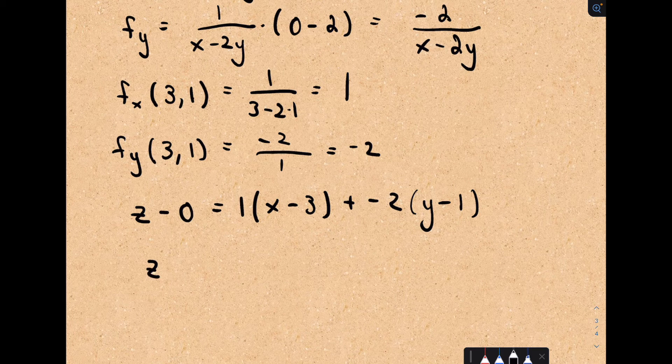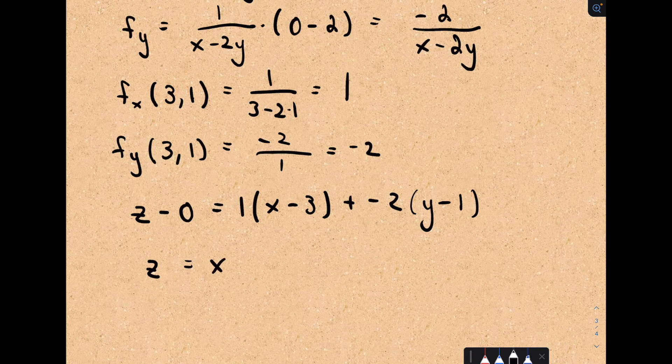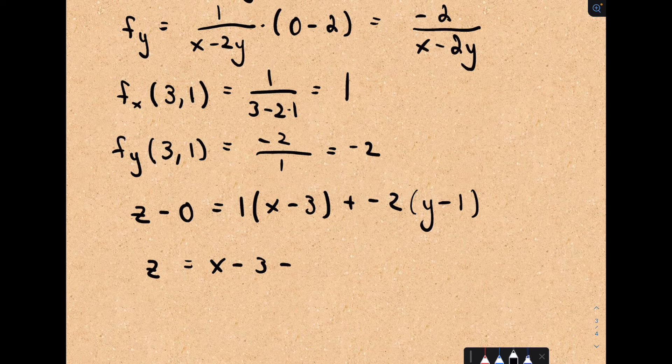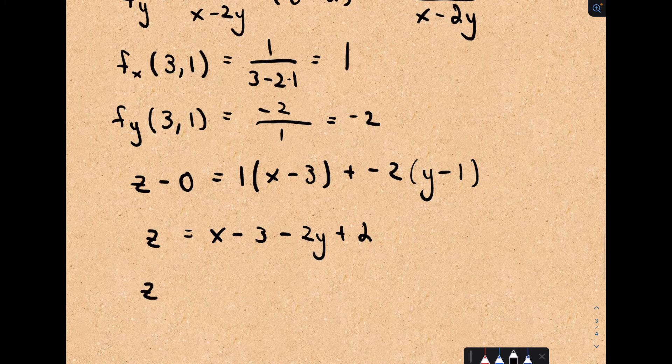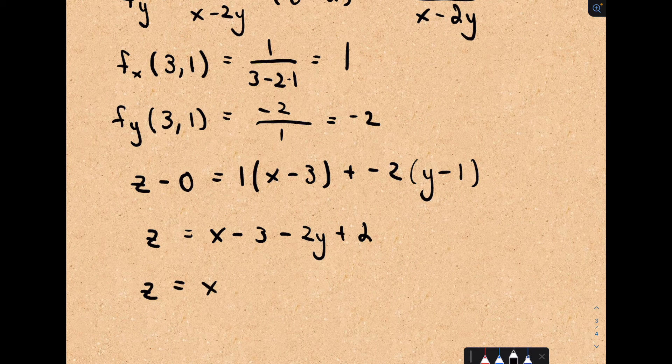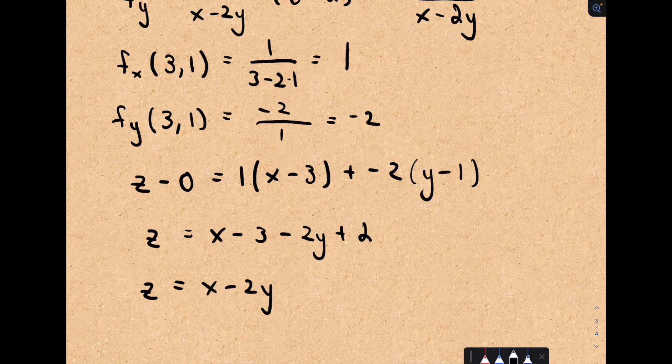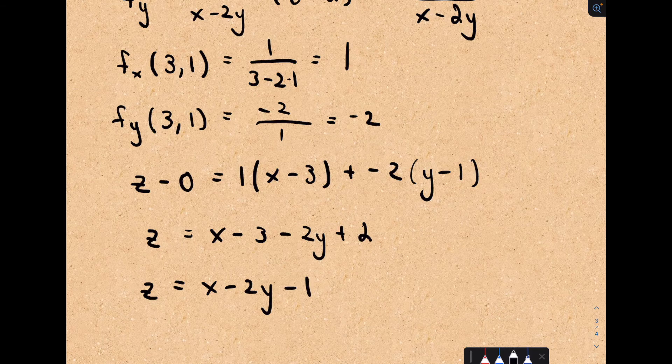Plus the partial with respect to y, which we said is negative 2, and we do y minus the corresponding y coordinate, we were using 1 in this case. And now we can just simplify this. So on the left, we're just left with z, which is convenient. We'll get x minus 3, minus 2y plus 2, or z equals x minus 2y minus 1.